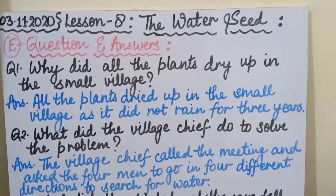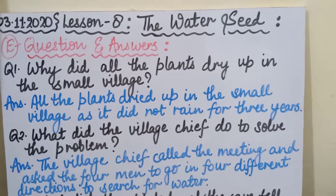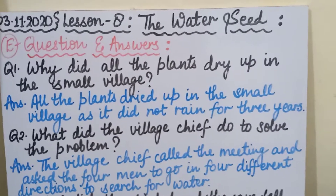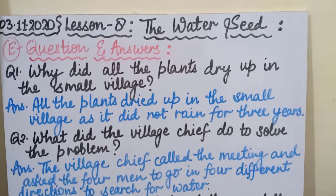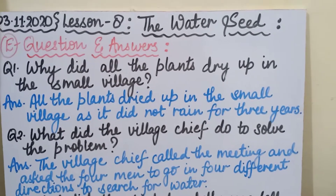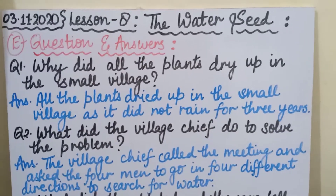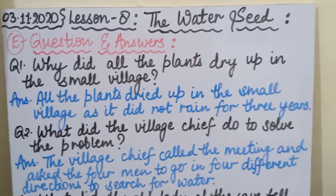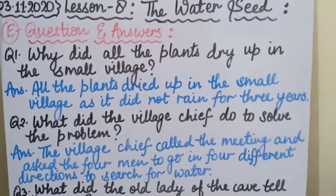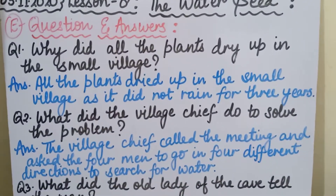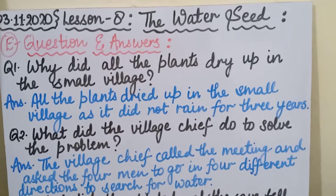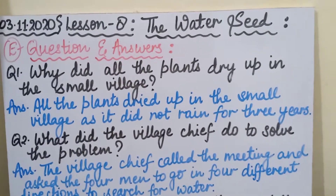as you all know, today this is our online English Literature class. We started this chapter last week and today we are going to do question answers. We have completed till D part and 4 exercises of this chapter — chapter number 8, The Water Seat.